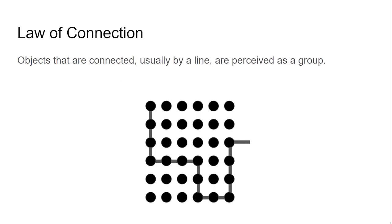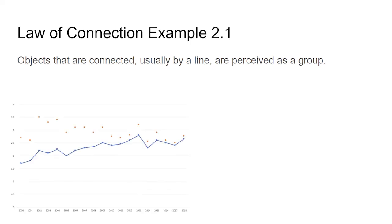With the law of connection, objects that are connected, usually by a line, are perceived as a group. Here are a few examples where lines connecting dots create a connection.